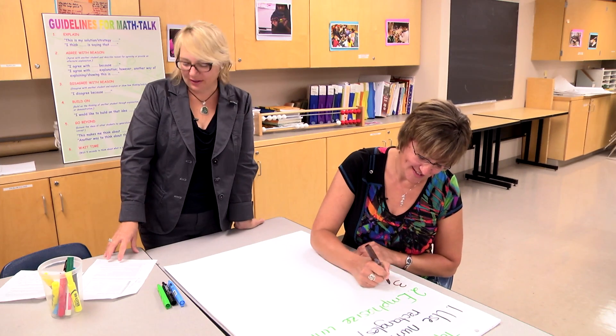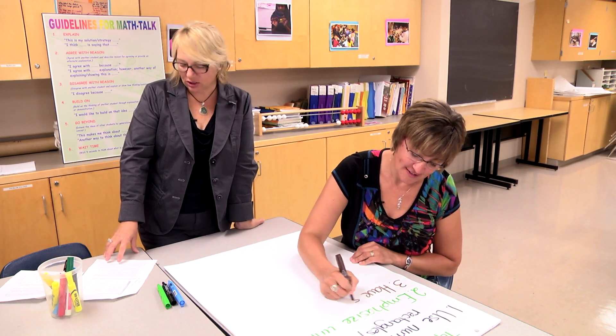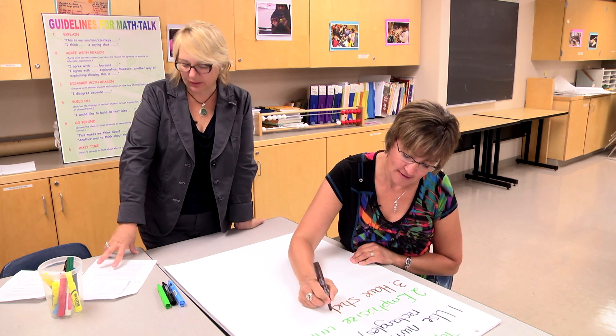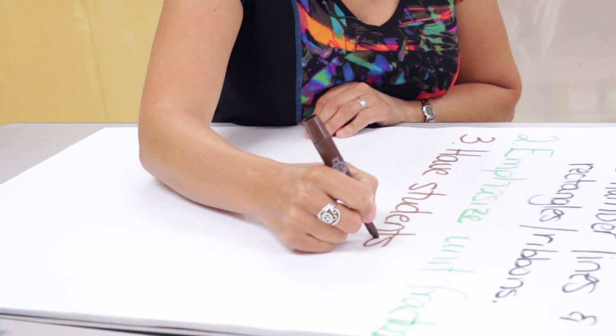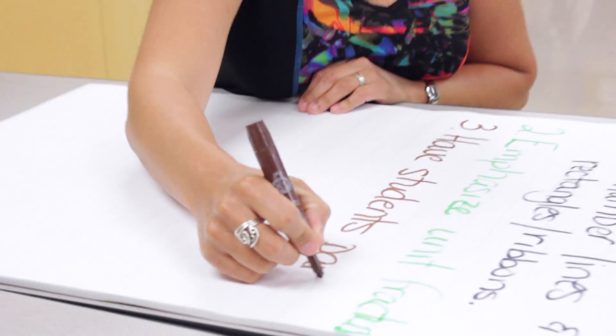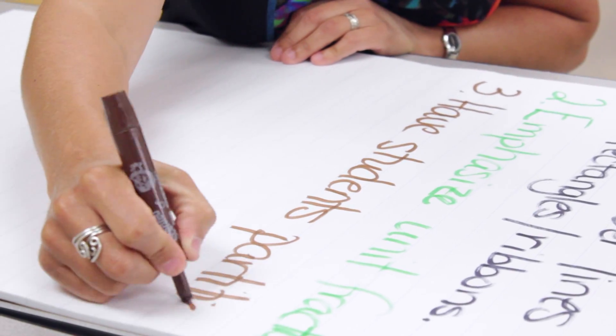Our third lesson learned is to have students partition shapes and paper folding to make sense of equi-partitioning. Paper folding is rarely done in schools and we think we should bring that back.